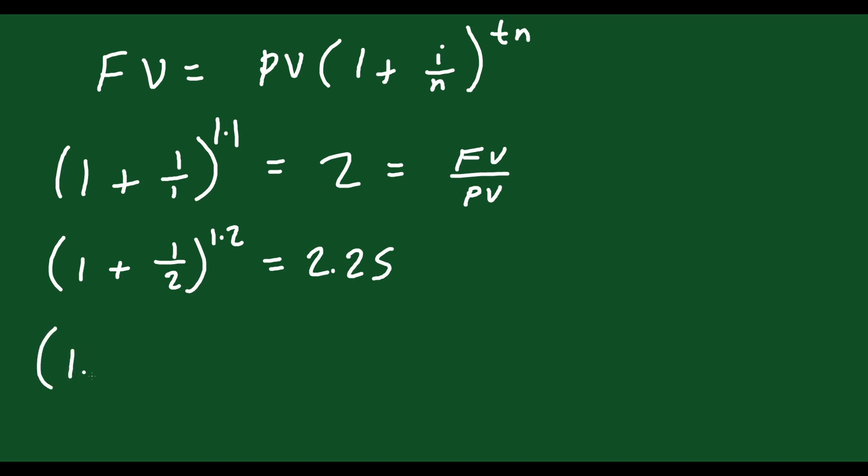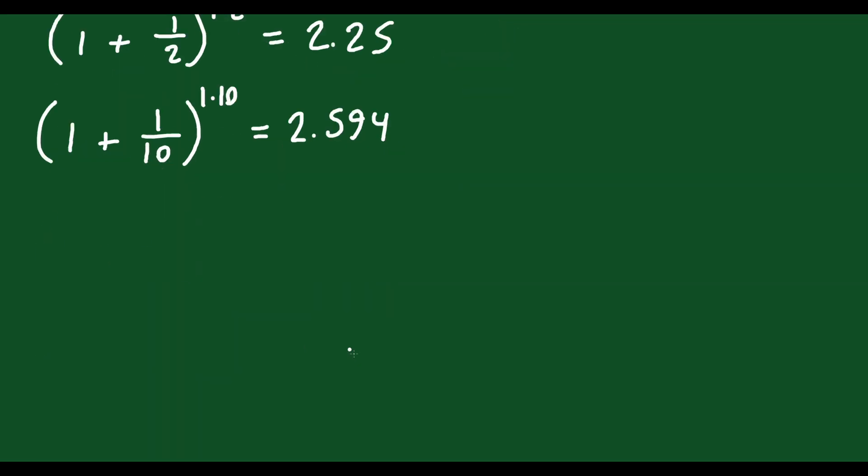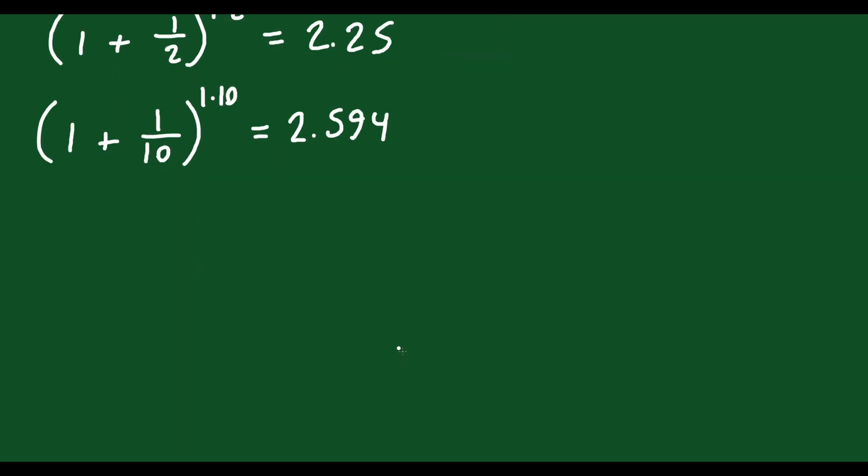What if I do 10? What if I do (1 plus 1 tenth)? So 10 times a year, this is being compounded. So 1 times 10. In the bracket here, I have 1.1. That's what this is to the exponent of 10. And that's going to be 2.594, approximately. So again, it's gone up. This is more and more profitable the more frequently we compound this. So let's compound it some more.